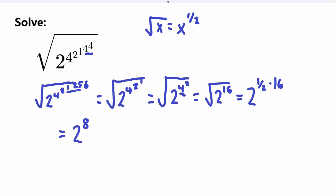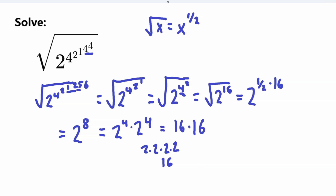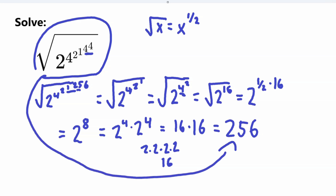Now we just need to find 2 to the power of 8. We can do this as 2 to the power of 4 times 2 to the power of 4. 2 to the power of 4 is 2 times 2 times 2 times 2, which gives us 2, 4, 8, 16 — so that's 16. So we just have 16 times 16, which we already calculated up here — it's equal to 256. So our final answer for this problem is 256. Thank you for watching this video. I hope you enjoyed it, and see you next time. Bye!